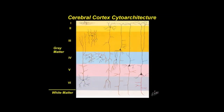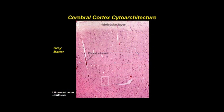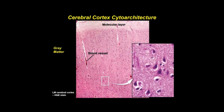The cerebrum consists of two hemispheres with an outer cortex of grey matter and a central region of white matter. In the cortex, different types of neurons and fibers are arranged into six ill-defined horizontal layers, which differ in neuronal population density. Pyramidal and stellate neurons are most numerous. By LM, the molecular layer appears pale, and pyramidal neurons and supportive glial cells sit in an interwoven network of neuronal and glial cell processes.